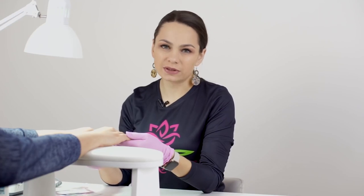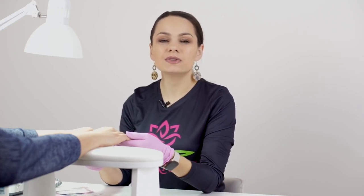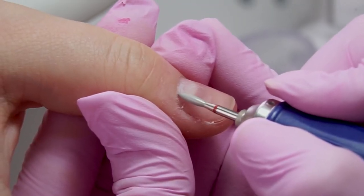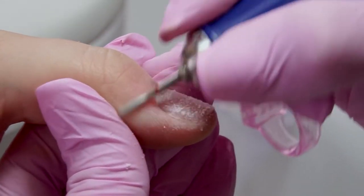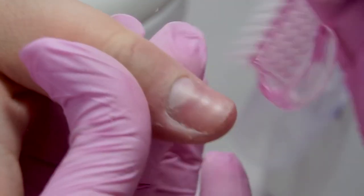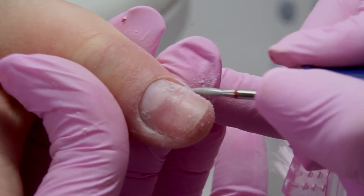Prepare the nails for the extension. Do a manicure, apply all the necessary products and a base coat. I'm using a diamond drill bit to remove the pterygium from the nail plate. There is little cuticle but lots of pterygium, so I need to clean it well.